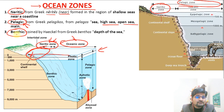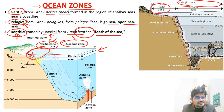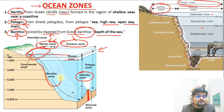Then we have the benthic zone, coined by ecologist Haeckel from the Greek word benthos meaning 'depth of the sea.' As you go down through the photic zone into the aphotic zone — where light does not penetrate — that zone is called the benthic zone. It goes deep inside the ocean.